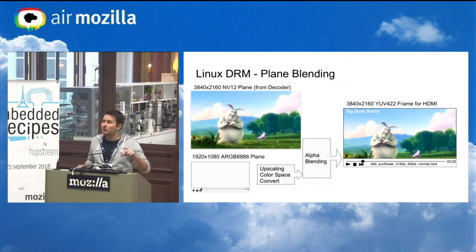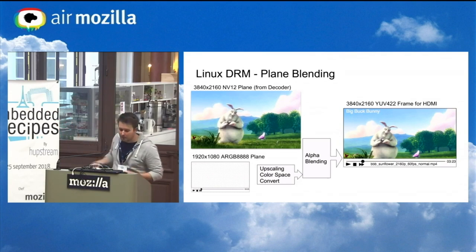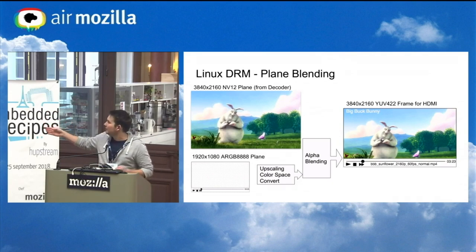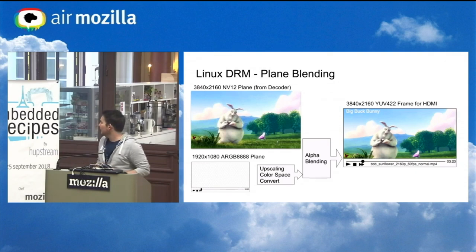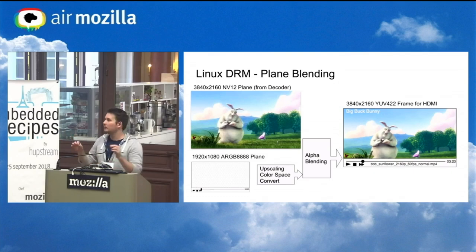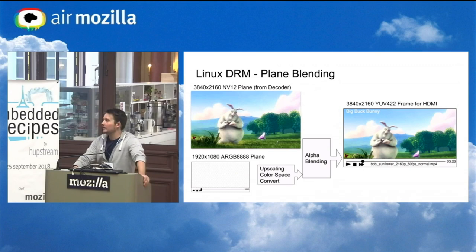In this use case, we have two planes. We have an NV12 plane that we fill with the video from the decoder — it's in 4K resolution. And we have a 1080p RGB plane that has the UI with the play/pause button, subtitles, etc. All we have to do is fill those planes, and then the DRM driver sets it up so the bottom plane is upscaled, pixel formats are converted, and there is alpha blending so the UI plane doesn't cover the whole video. What you get on screen is the merge of these two planes.